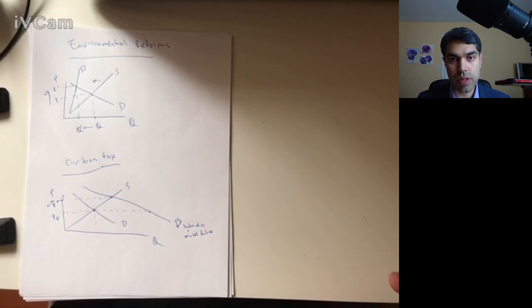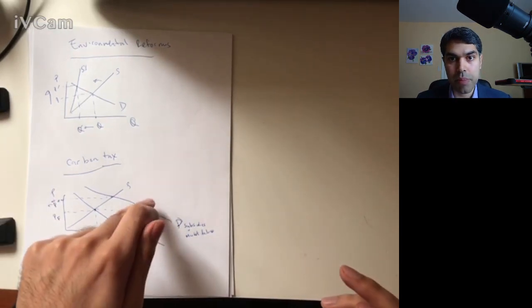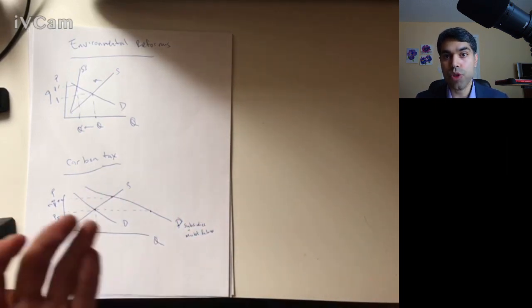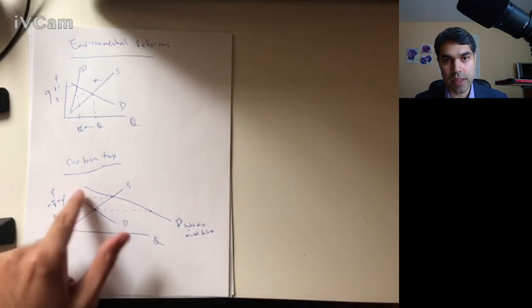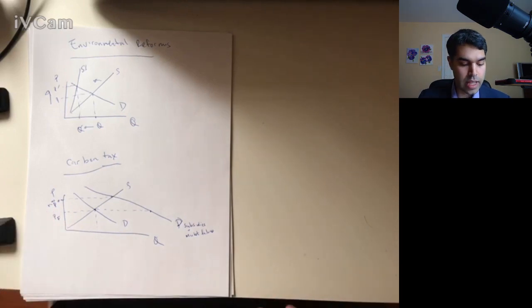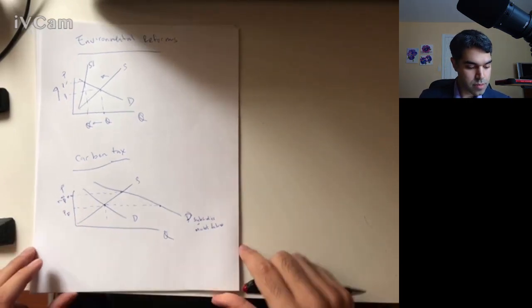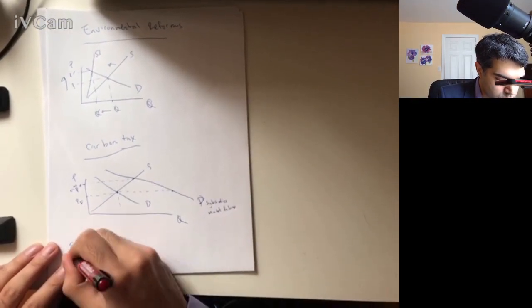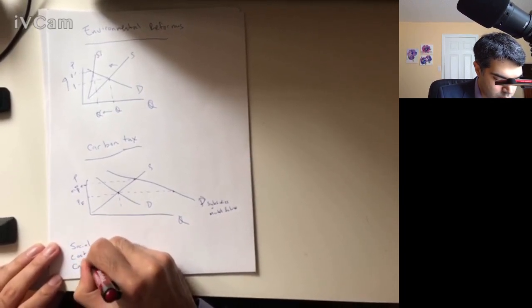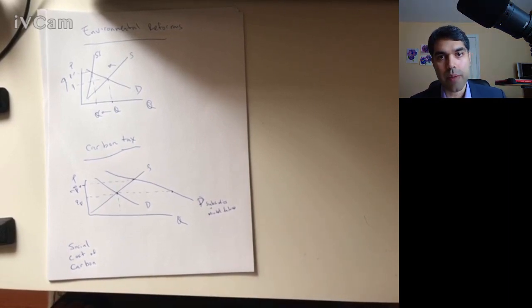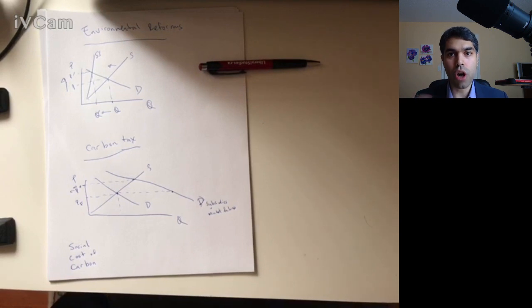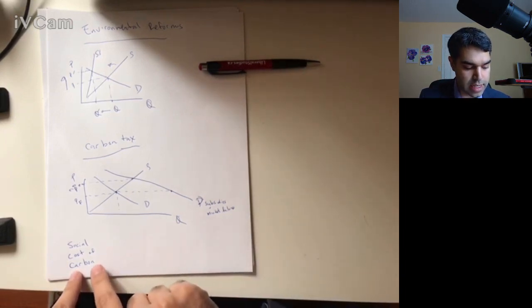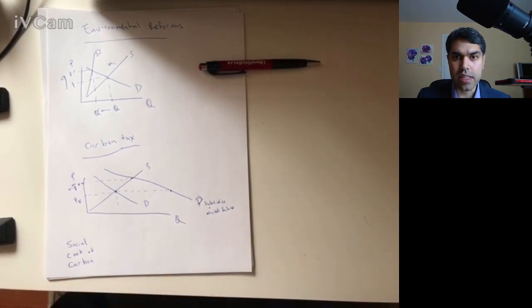We have no idea what this real demand curve would look like. And so setting the price at that place where this imaginary demand curve would be is virtually impossible. So we've got people winning Nobel Prizes now trying to estimate this, but this is still an estimate. We don't know for sure. Another issue is trying to determine something called the social cost of carbon. The social cost of carbon is the idea that what carbon is going to cost for society as a whole. How much is it going to cost in terms of lives, in terms of property damage, in terms of the animal welfare that we're losing?